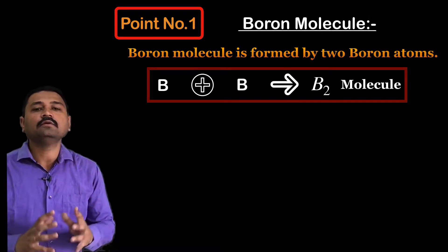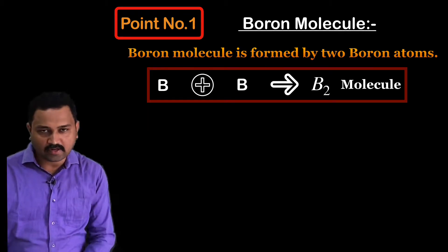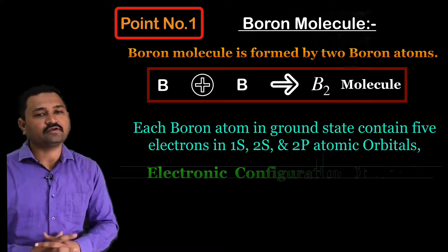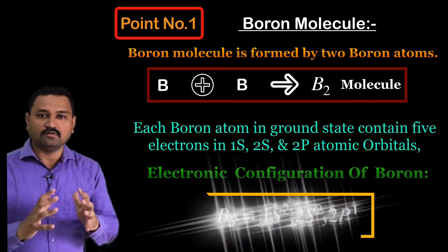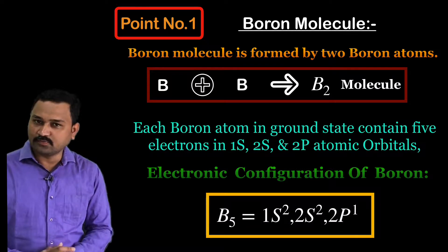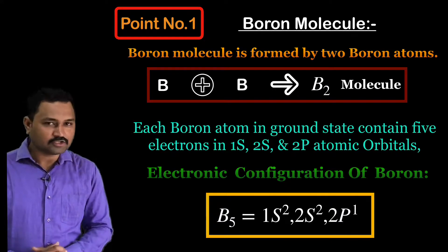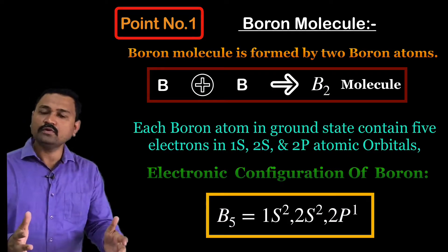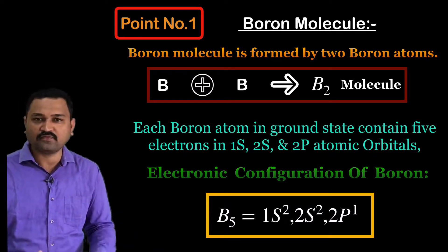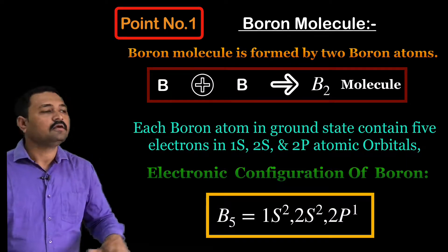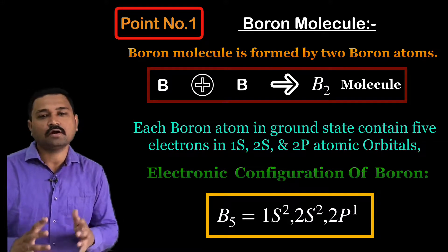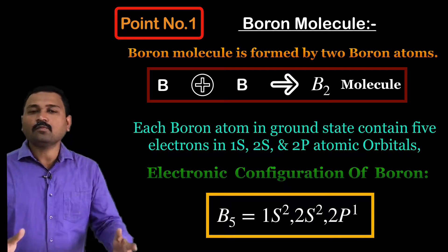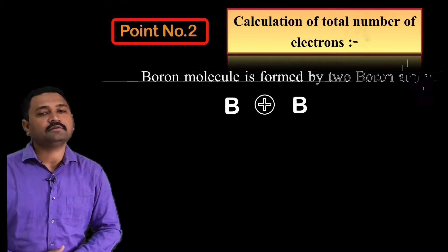Point number one: the boron molecule is formed by two boron atoms, and each boron atom in the ground state has five electrons in its 1s, 2s, and 2p atomic orbitals. The atomic number of boron is 5, and its ground state electronic configuration is 1s², 2s², 2p¹. This is our point number one.